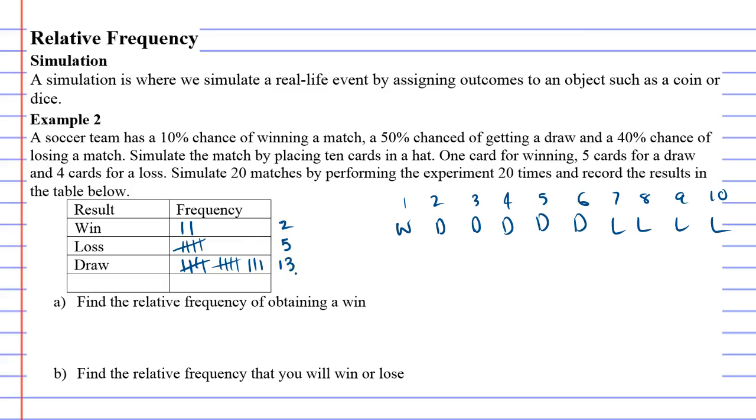Now question A says: find the relative frequency of obtaining a win. In this experiment we got a win only twice, and we conducted the experiment 20 times. So two out of 20, which is 1 over 10. That's exactly what they predicted - they said a 10% chance of winning, so that's good.